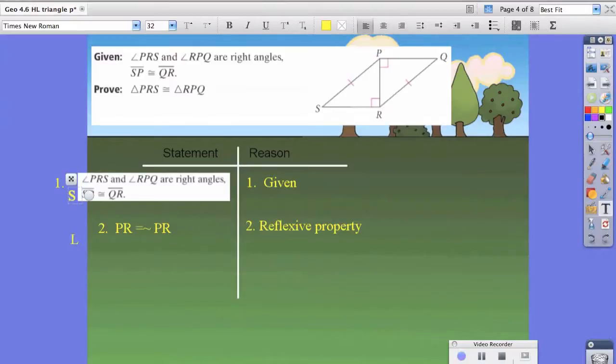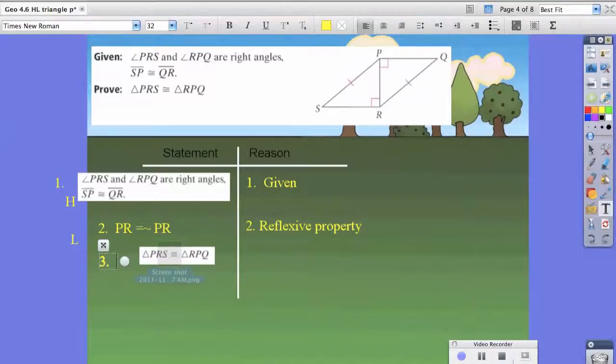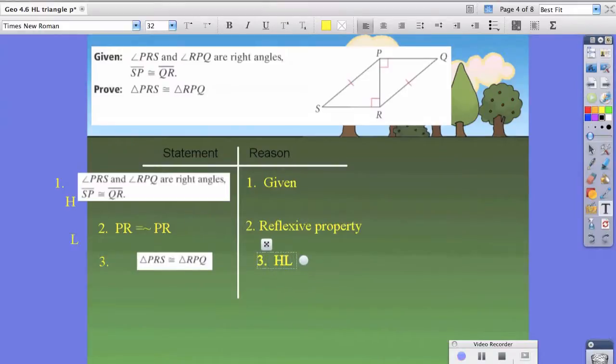And the one before that was our hypotenuse. Therefore, we can say the two triangles are congruent. You could say the two right triangles are congruent because of the HL theorem.